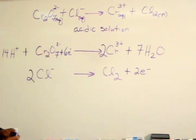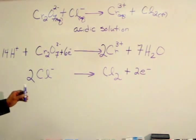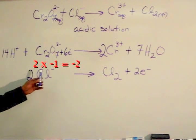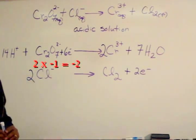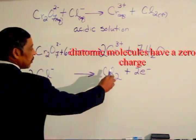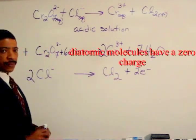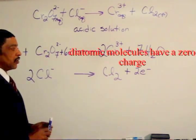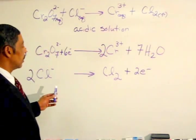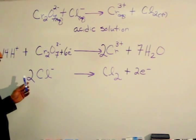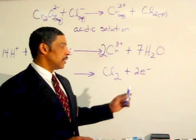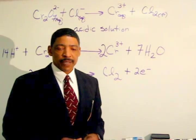In the second half reaction, the charge on the left side is negative two, where two times minus one is minus two, and the charge on the right side is zero. Adding two electrons to the right side will balance the charge, where on the left side the charge is minus two, and now on the right side the charge is also minus two.